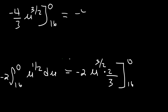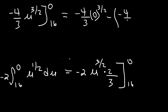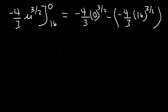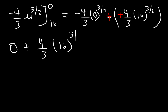Plugging in 0 gives negative 4 over 3 times 0 to the 3 halves, then minus negative 4 over 3 times 16 raised to the 3 over 2. Zero raised to any power is 0, and the two negative signs become positive, giving positive 4 over 3 times 16 raised to the 3 over 2.